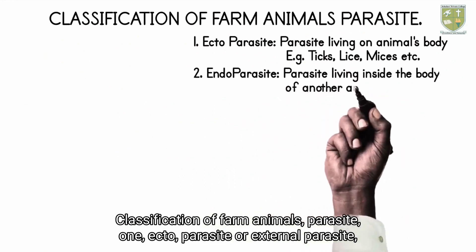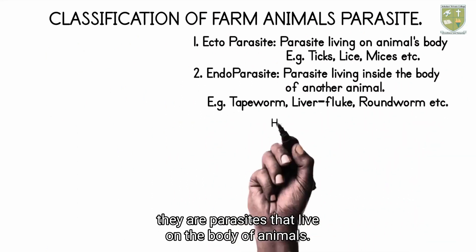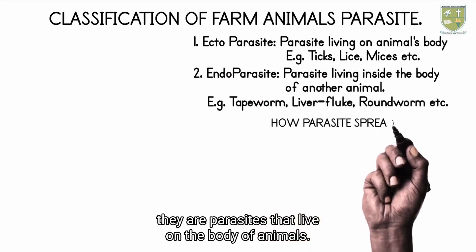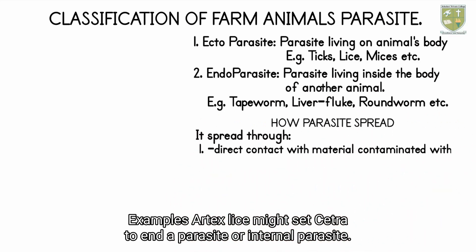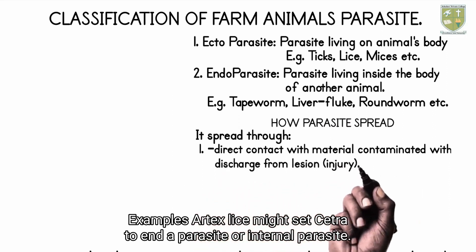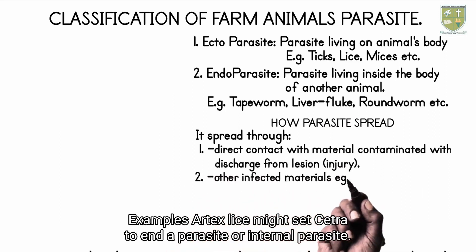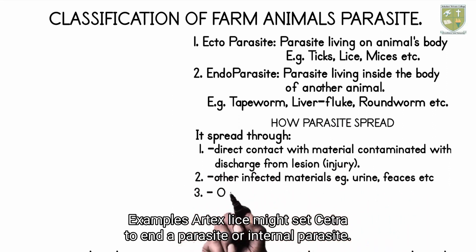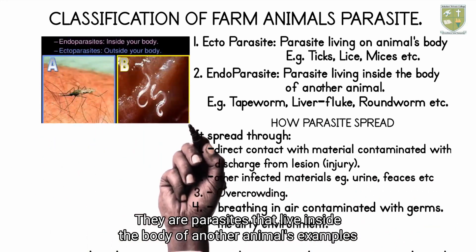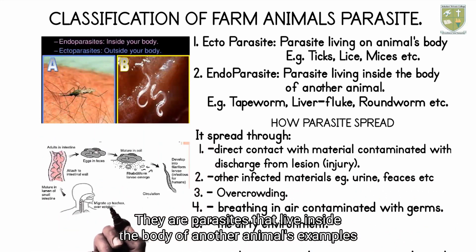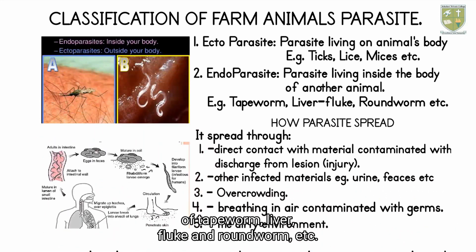Classification of farm animal parasites: First, ectoparasites or external parasites — these are parasites that live on the body of animals. Examples are ticks, lice, mites, etc. Second, endoparasites or internal parasites — these are parasites that live inside the body of another animal. Examples are tapeworm, liver fluke, and roundworm, etc.